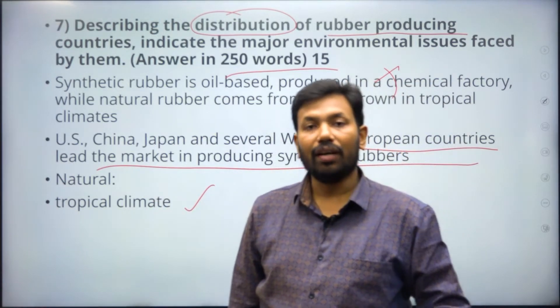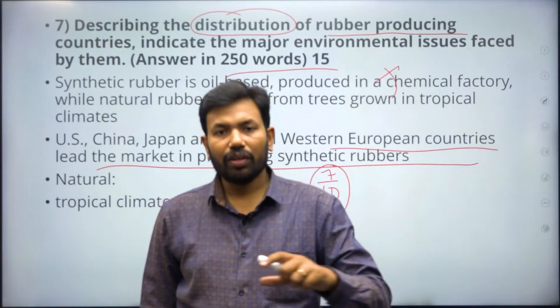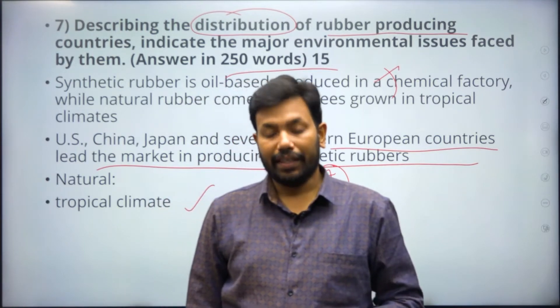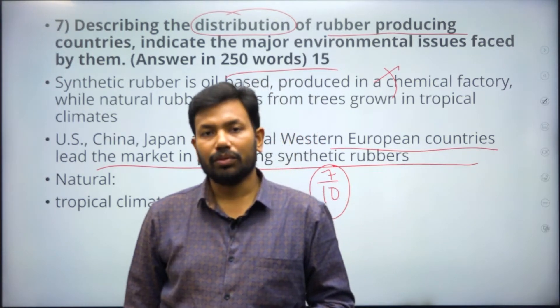For natural rubber, India and Indonesia are among the best producers. We also have Congo and the Amazon region. All equatorial countries contribute significantly. In India, Kerala has an ample amount of rubber production.